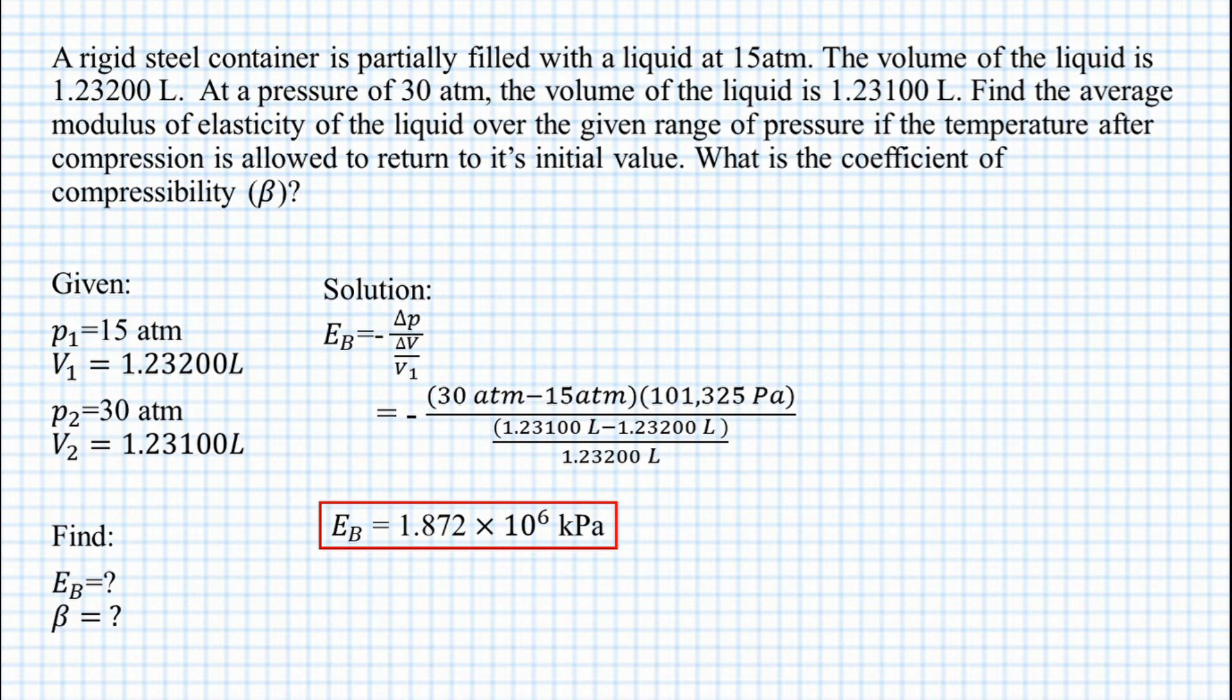For the compressibility, we have a formula of compressibility equals 1 over modulus of elasticity. Then plug in the numbers, the value of 1 over 1.872 multiplied by 10 raised to the power of 6 kilopascals.